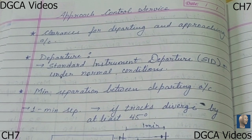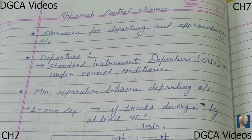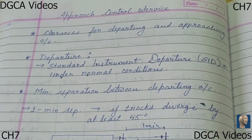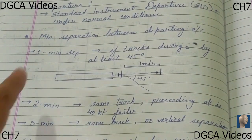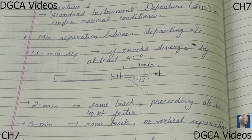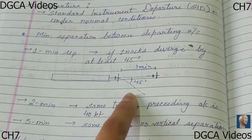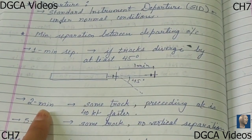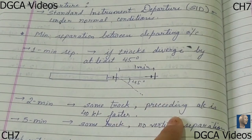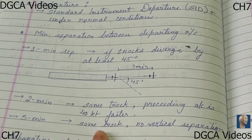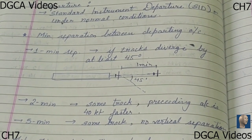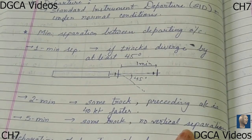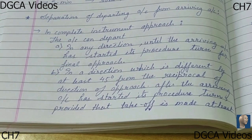Moving on to the minimum separation between departing aircraft. If there are two departing aircraft, what minimum separation has to be maintained? There are three: one minute, two minutes, and five minutes. One minute separation is provided if the tracks of the two aircraft diverge by at least 45 degrees. Two minute separation is provided if the aircraft will be following the same track and the preceding aircraft is 40 knots faster. Five minute separation is provided if the aircraft are flying in the same track and no separate vertical separation is provided.